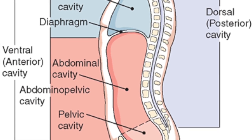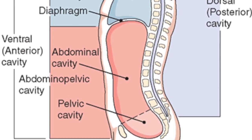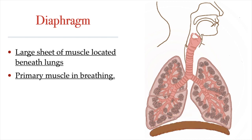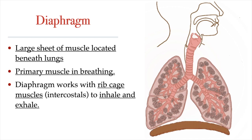The diaphragm divides the abdominal cavity from the thoracic cavity. It is a large sheet of muscle located beneath the lungs, and it is the primary muscle involved in breathing. Although the diaphragm is a large sheet of muscle, it is not flat when it's relaxed — when relaxed, the diaphragm is dome-shaped, a bit like an inverted bowl. However, when the diaphragm contracts, it flattens, which enlarges the chest cavity. So the diaphragm works with the ribcage muscles, called the intercostal muscles, when we inhale and exhale.